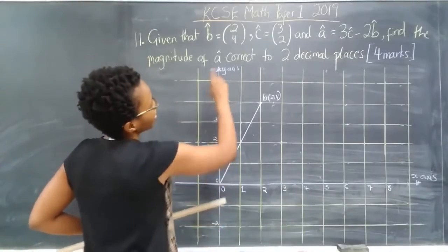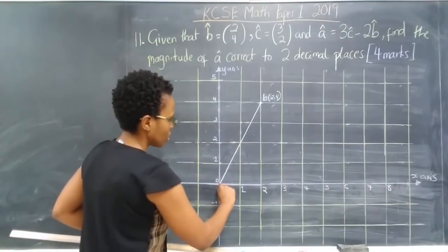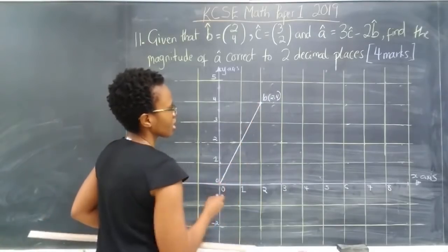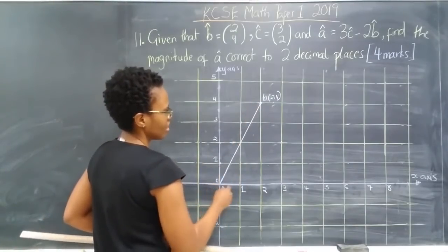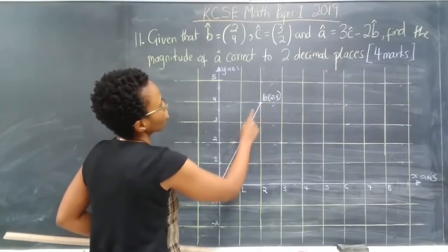Now, if they had asked us for the magnitude, we'd literally measure the distance from here to here, that's what's the magnitude of that vector. But since we've just been given the position, that's all we need for now, (2, 4).